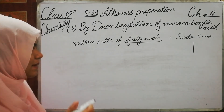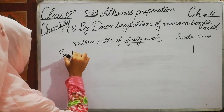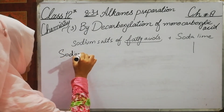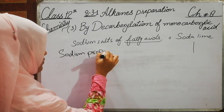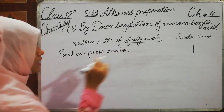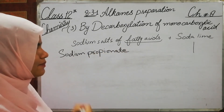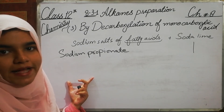Besides this, we have an example of sodium propionate. In this case, we attach the ethyl group to R, so R becomes CH3CH2.